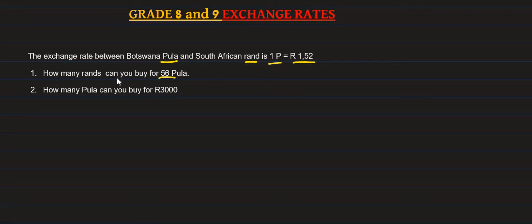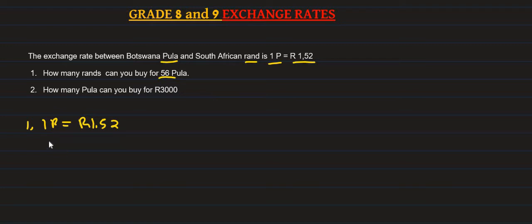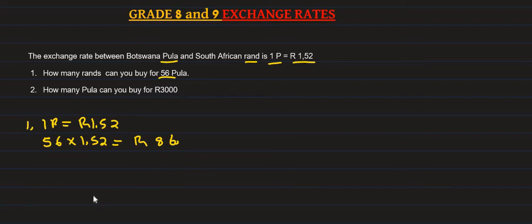How many Rand can you buy for 56 Pula? So, if one Pula equals 152 cents, and we have 56 Pula, then we multiply: 56 multiplied by 1 Rand 52 cents. The answer is 86 Rand — I offer 85 Rand 12 cents.